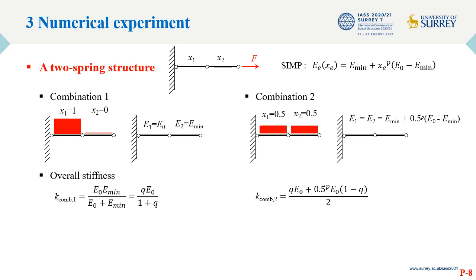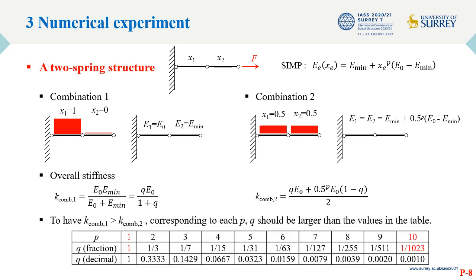To have the overall stiffness of the first combination larger than that of the second, the values between P and Q should be chosen carefully. As shown in the table, if P equal to 1, the lowest value of Q is 1. If P equal to 10, Q should be larger than 1 over 1023. For our previous two examples, P equals to 1 or 10, but Q remains to be 1 over 10 to the power of 9. This could be one of the reasons why the algorithm failed to generate binary designs.